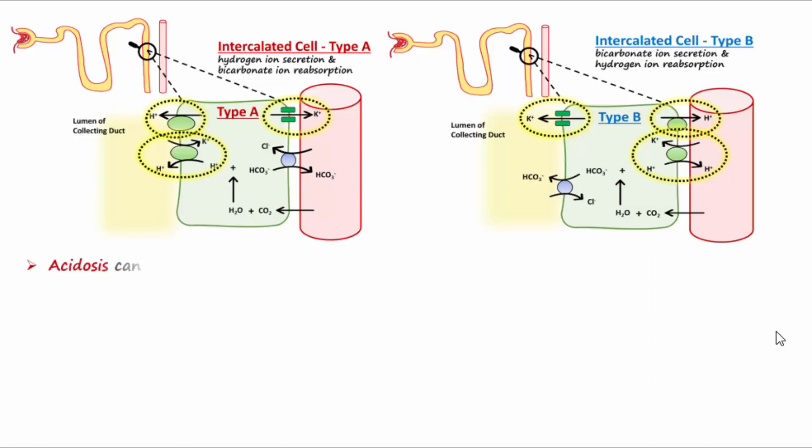Acidosis can bring about hyperkalemia, which is too much potassium in the blood. Remember with acidosis the type A cells are more active, and type A cells reabsorb potassium, increasing it in the blood.